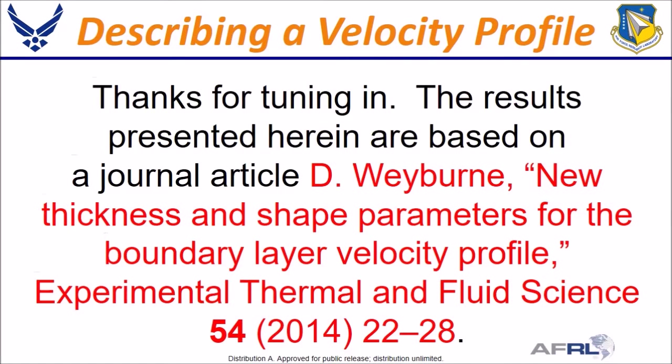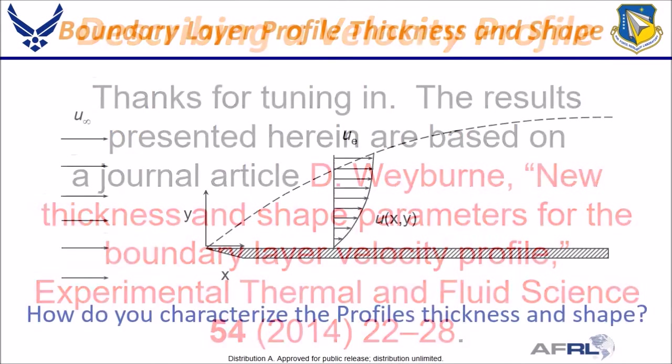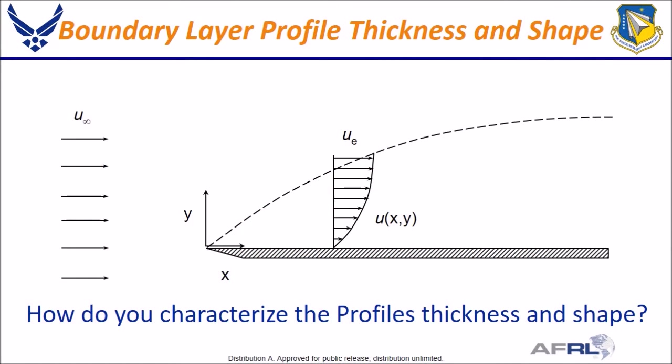Thanks for tuning in. The results presented today are based on the journal paper referenced here. So let's set the scene: a fluid flowing from left to right encounters a thin flat plate. The plate and the flow extend in and out of the plane in the plus/minus z direction. A boundary layer develops along the plate in the flow direction such that the velocity is zero at the surface and gradually transitions to u sub e at the boundary layer edge. The fluid velocity approaching the plate is u sub infinity.